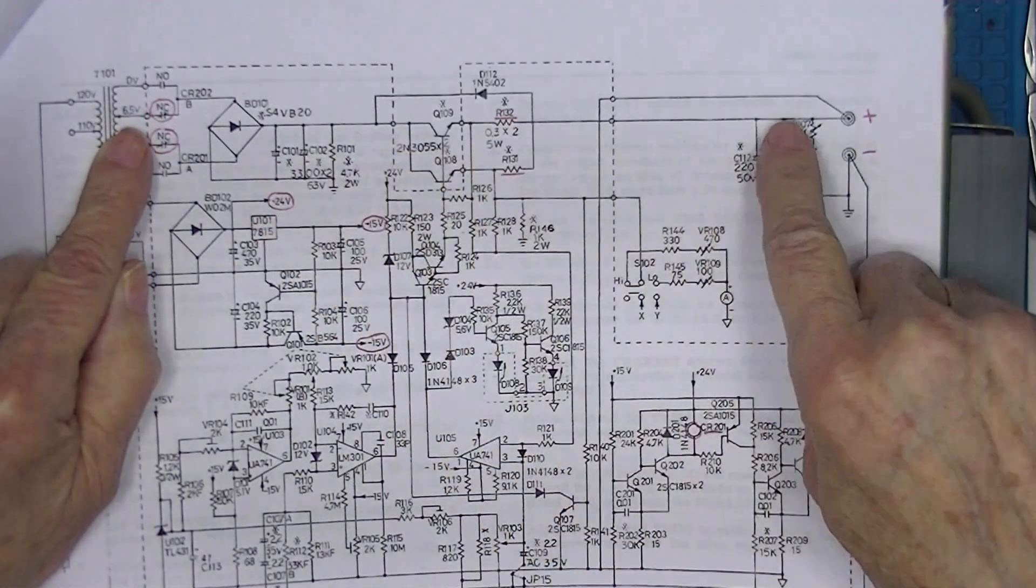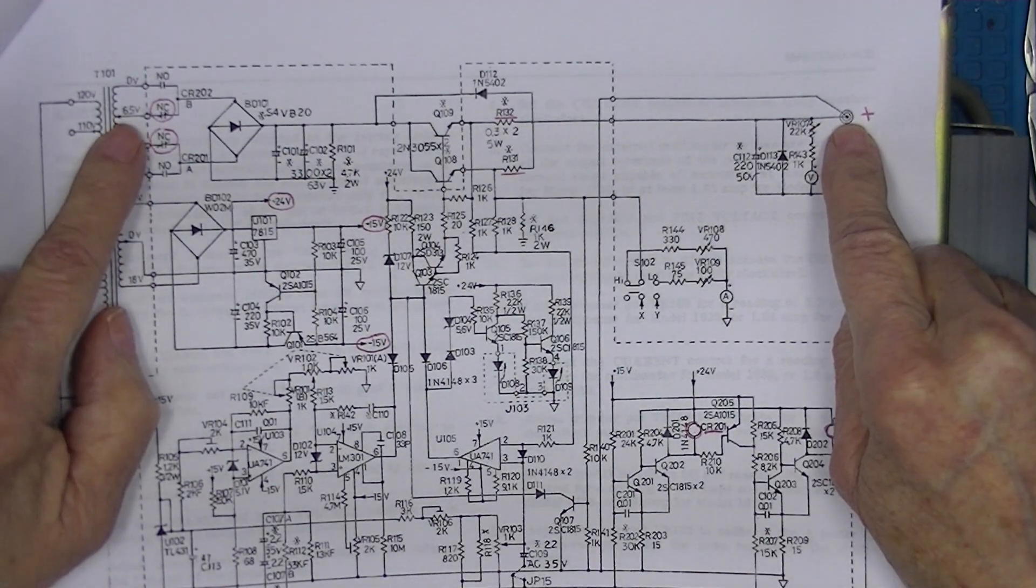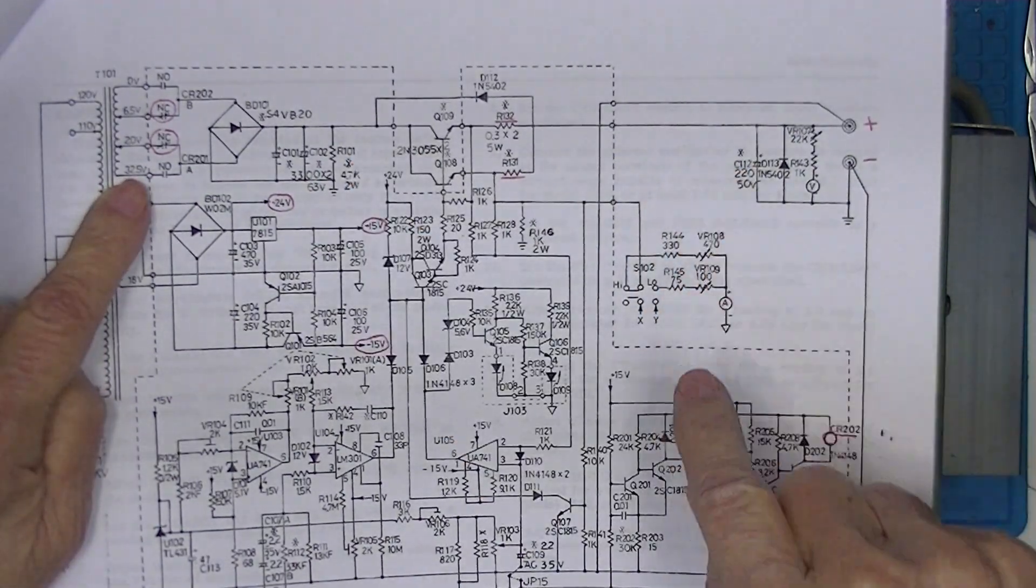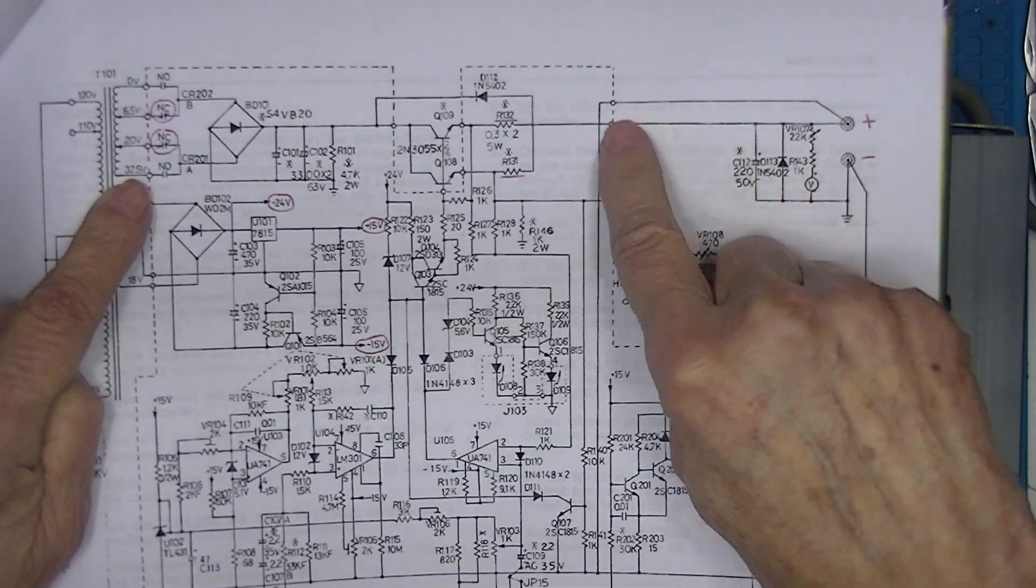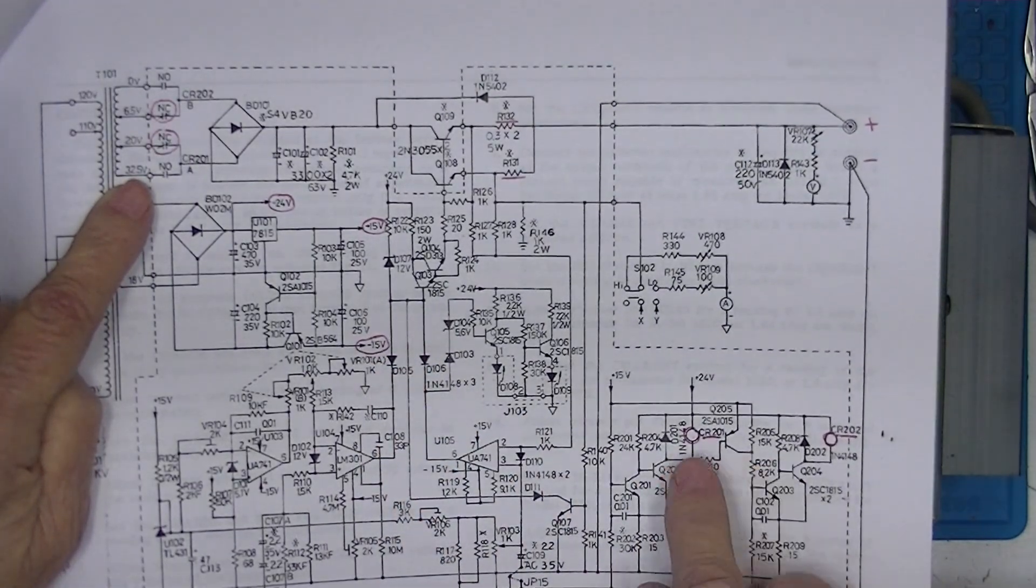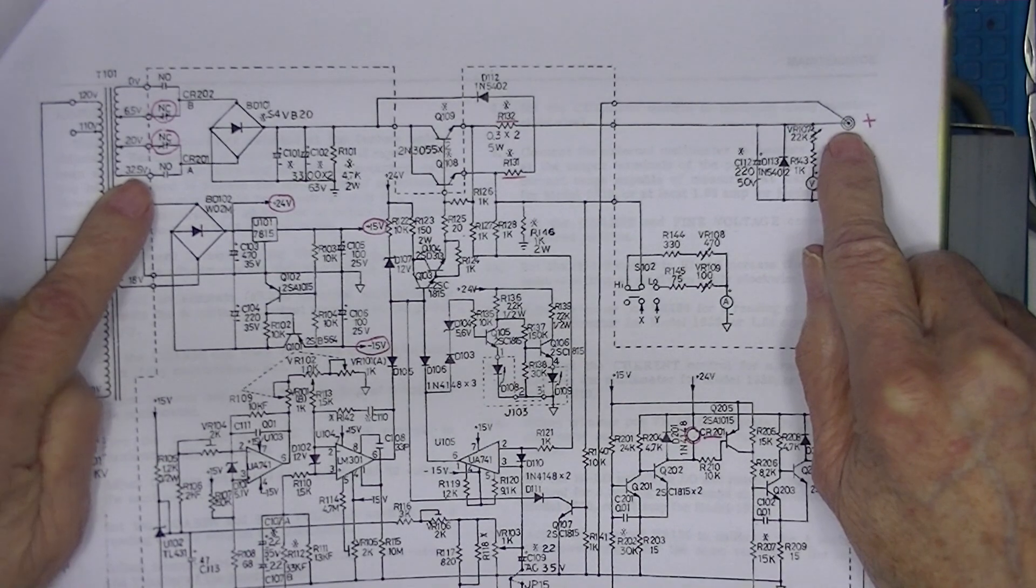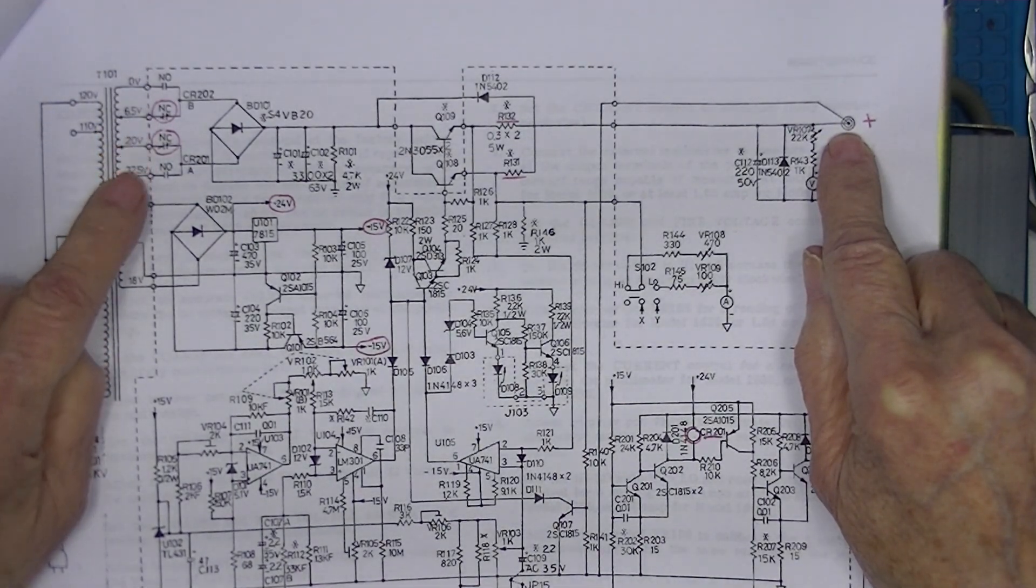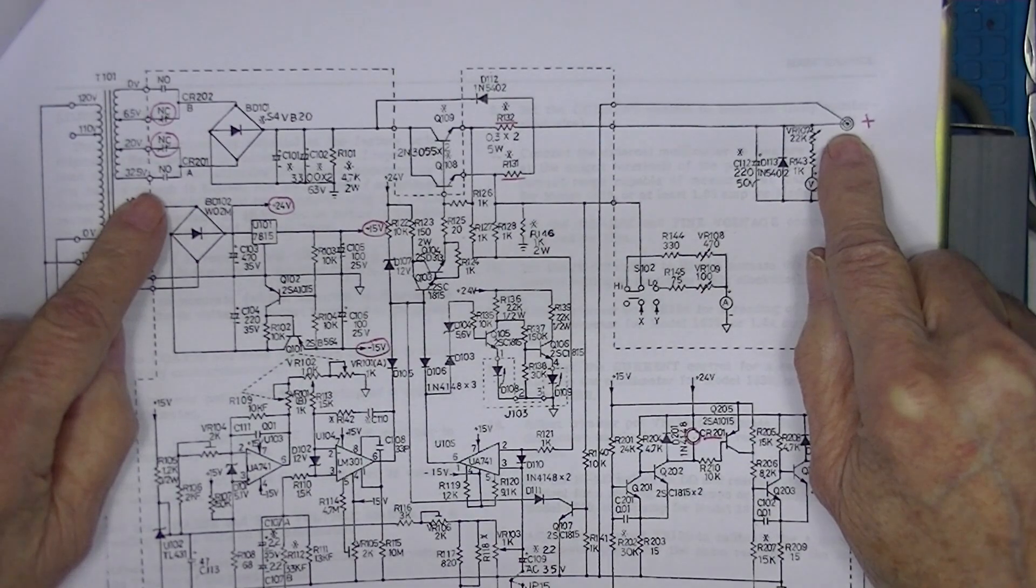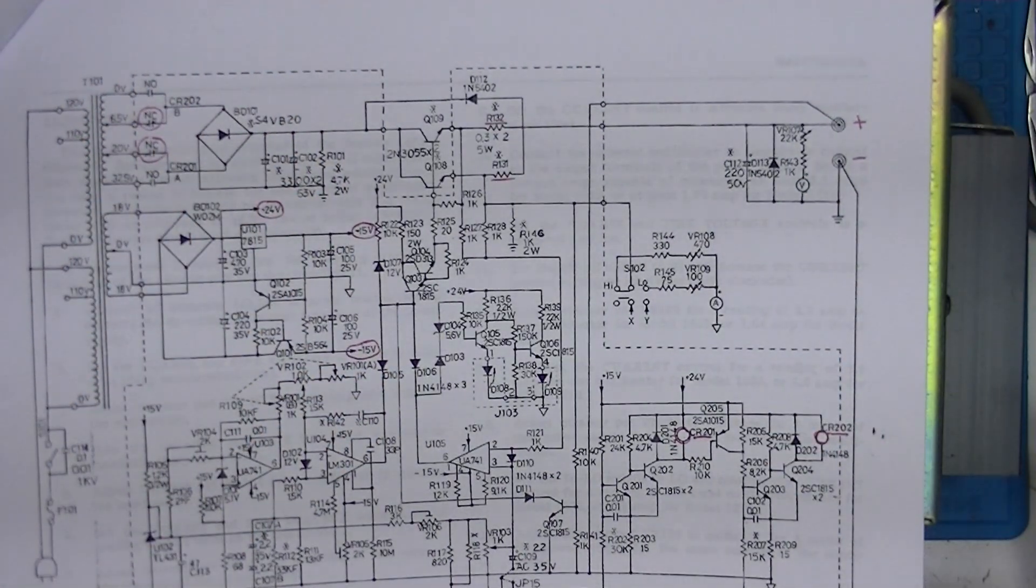But how do we get more than six and a half volts? Well, we have relays and those relays select which of these transformer taps is going to provide the voltage here. The voltage here is monitored by both the voltage control regulating system and by this relay switching system. As the voltage desired or appearing here increases, the relays are switched higher and higher and higher to increase the voltage here, so that the heat sinking system only has to be designed for about 20 watts or so.